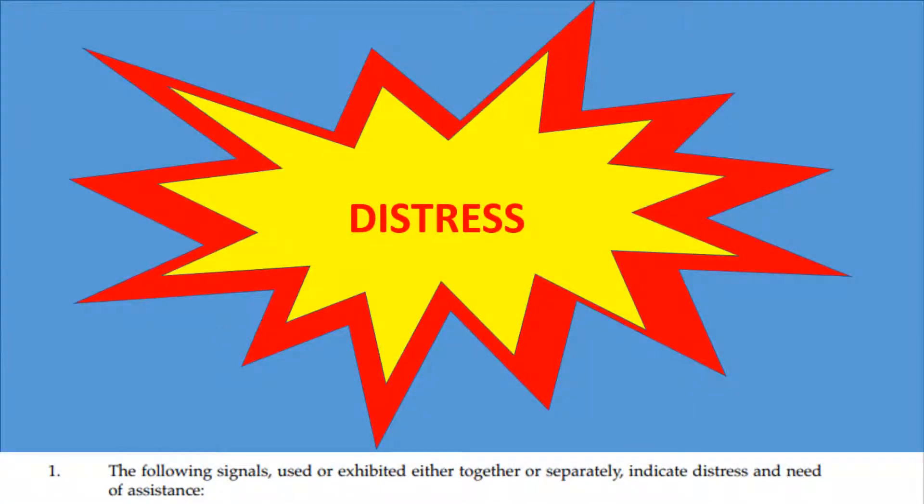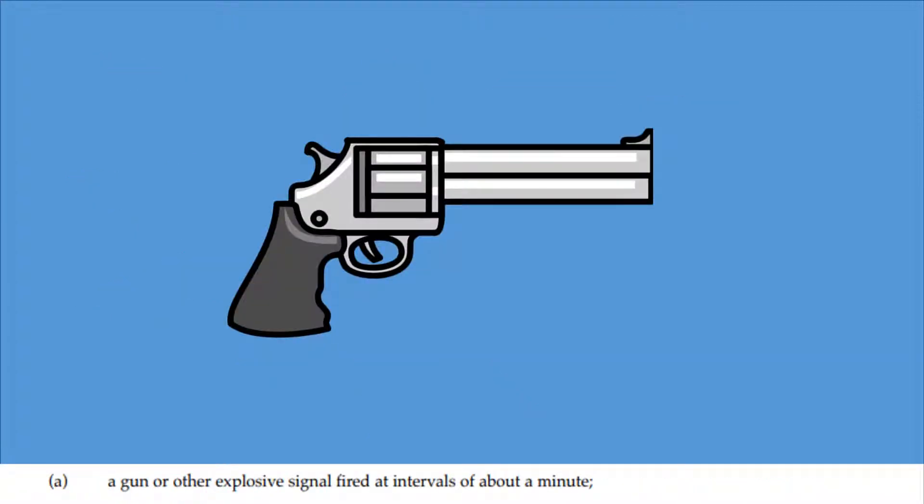The following signals, used or exhibited either together or separately, indicate distress and need of assistance. The definition of distress is grave and imminent danger to person, vessel, vehicle, or aircraft. Gun or other explosive signal fired at intervals of about a minute.